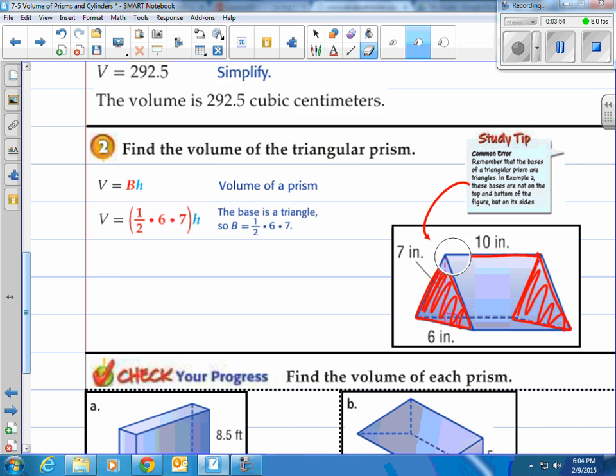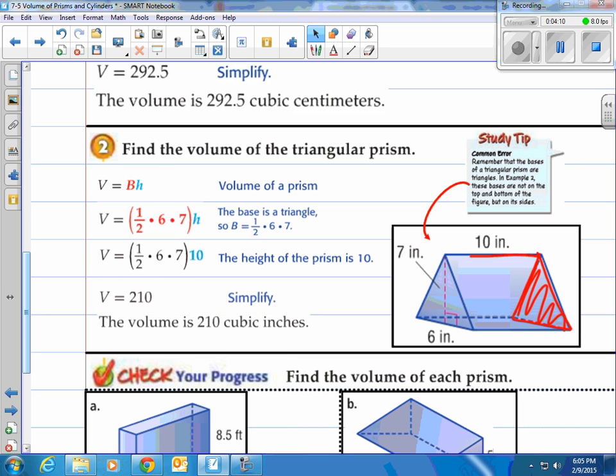You want to multiply 6 times 7, then multiply that by 1/2, then multiply by 10, which is the height, which is the distance between the two bases. You get 210 cubic inches.